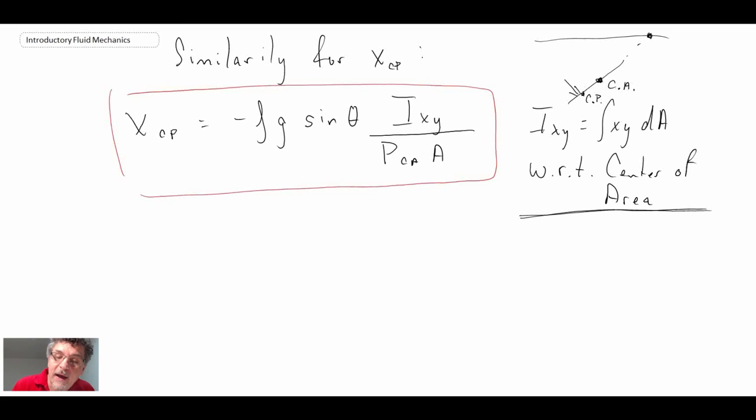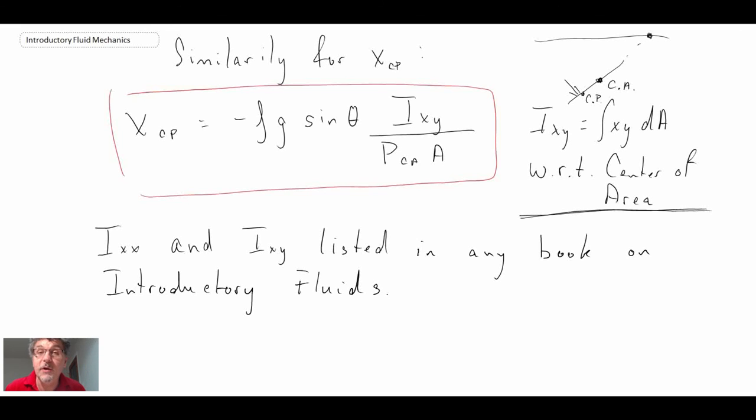So where do you get I_xx and I_xy? Well, those are listed in any book on fluid mechanics that you look at. And if you're doing pressure and forces on submerged planar surfaces, they will give you values for different types of shapes, circles, semicircles, triangles, rectangles. So you can find those in pretty much any book that you look at on introductory fluid mechanics, for common shapes.